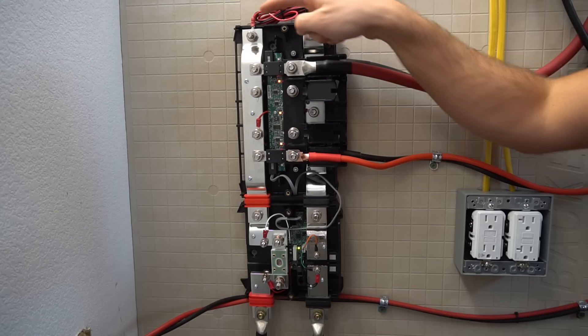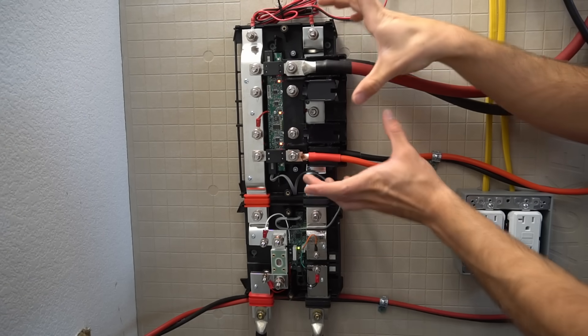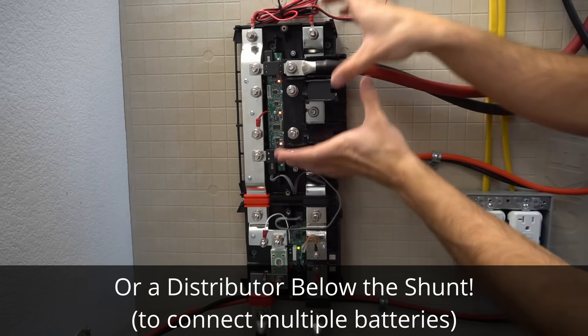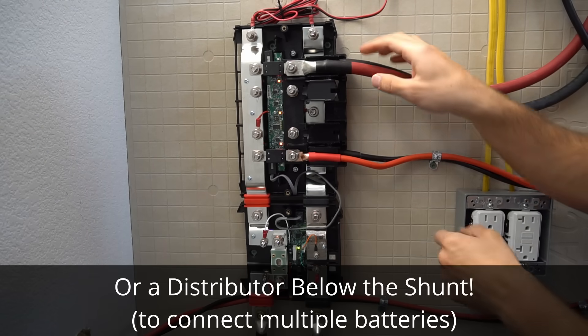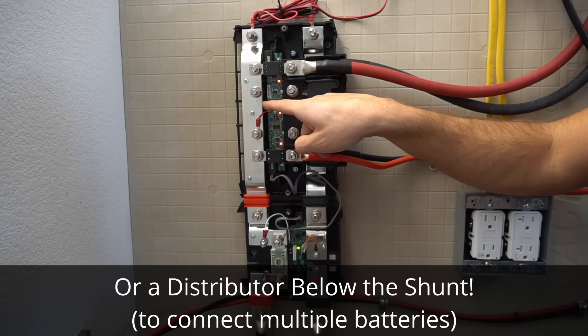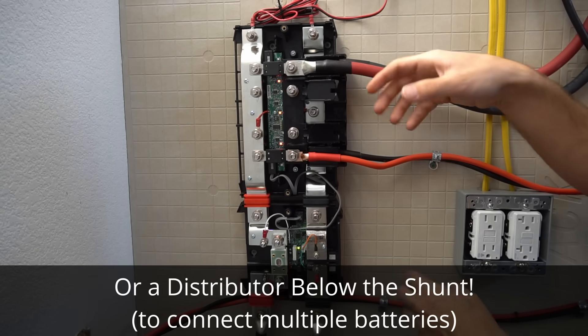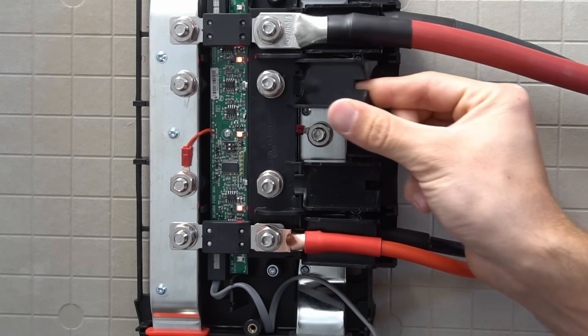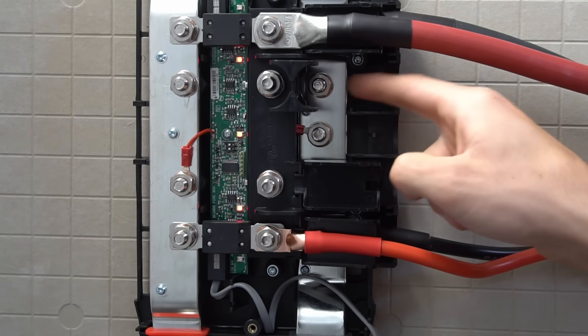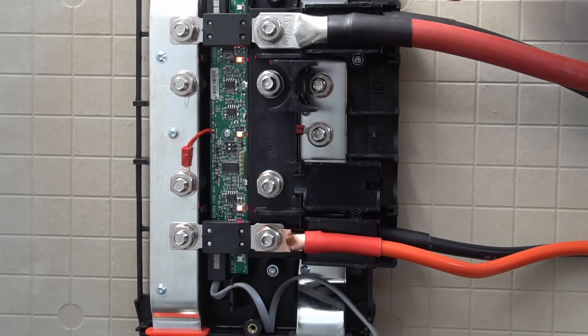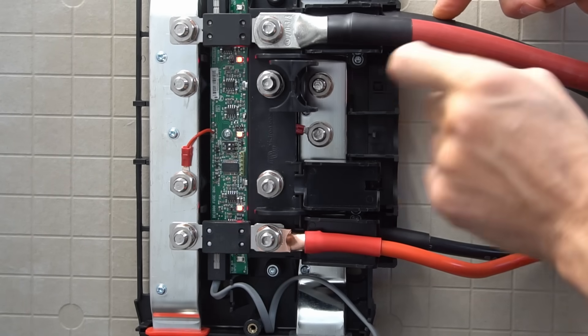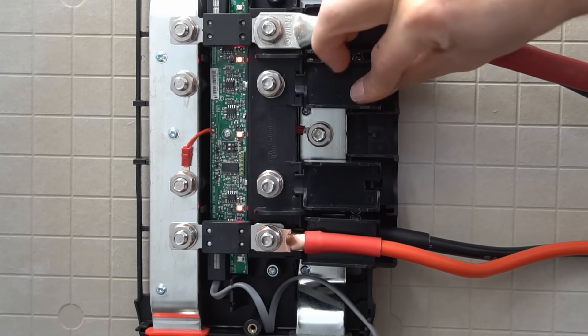Now the coolest thing is you have terminals up here and you can add another distributor onto this one. So you have one shunt distributor and as many distributors as you like. But this is limited to 1000 amps, so be sure to not exceed that. Now the cable management is quite interesting on this system. If you lift up these covers it will expose the negative bus bar.